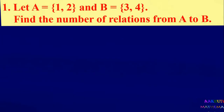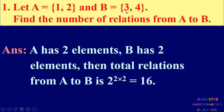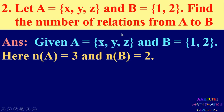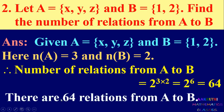These problems are from Exercise 2.2. First problem: let A = {1, 2} and B = {3, 4}. Find the number of relations from A to B. Set A contains 2 elements and set B contains 2 elements. Total number of relations is 2 to the power 2×2, that is 2 to the power 4, which is 16. Second problem: let A = {x, y, z} and B = {1, 2}. Find the number of relations from A to B. Set A has 3 elements, set B has 2 elements, so total number of relations is 2 to the power 3×2 = 2 to the power 6, which is 64.